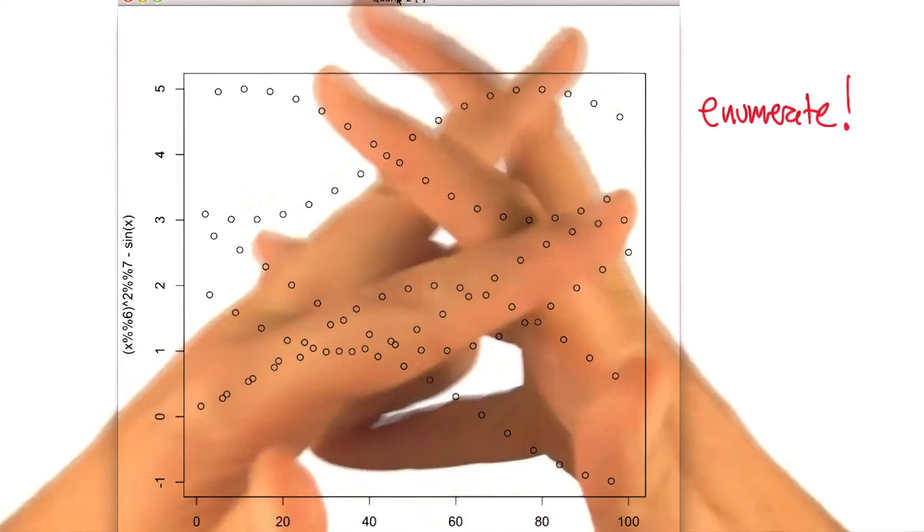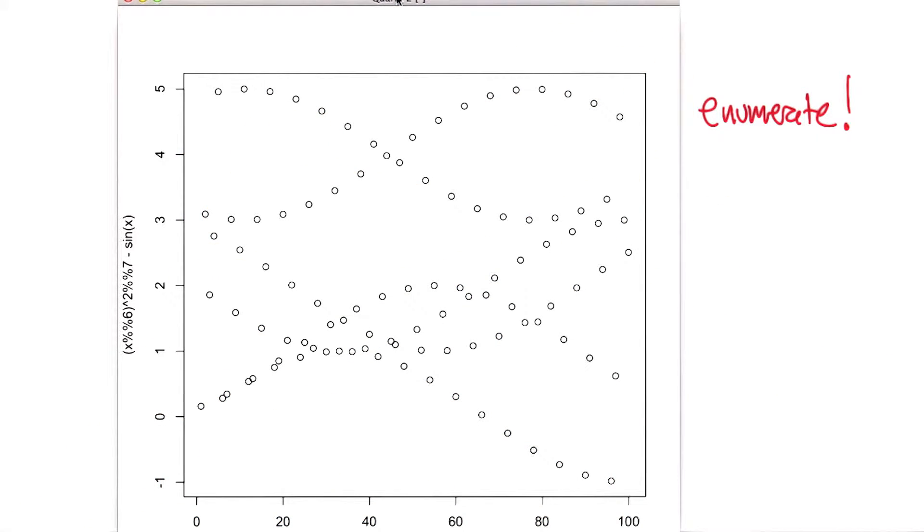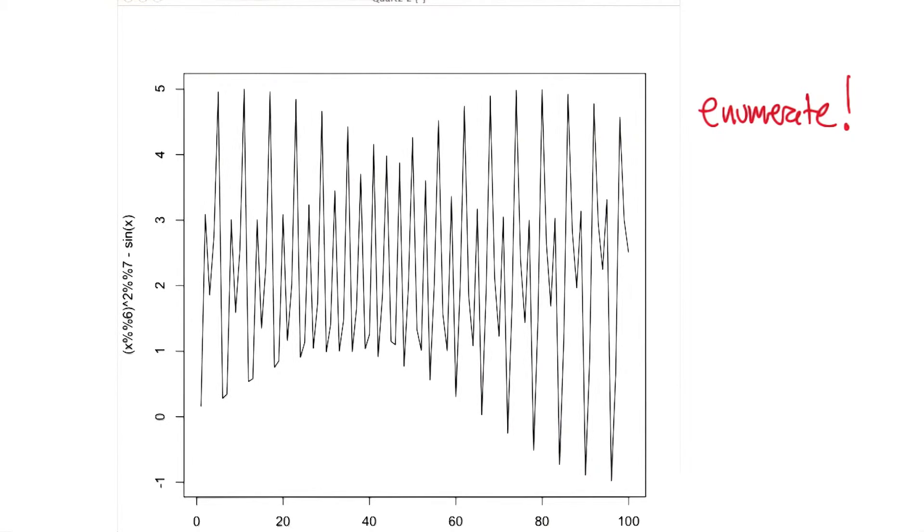Interdigitated. That is an awesome word. Yeah, it means to put your fingers together. So what happens if you plot that but with connecting lines? Oh, sure. Wow. You get something like that. Wow.